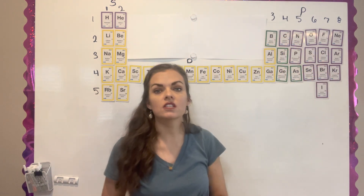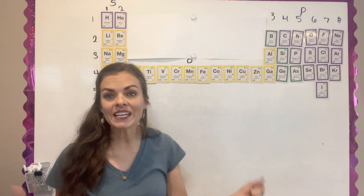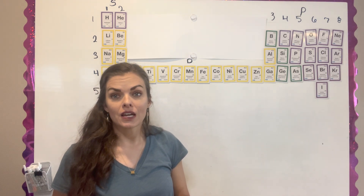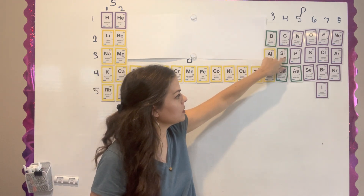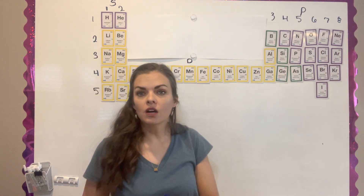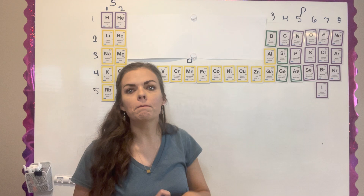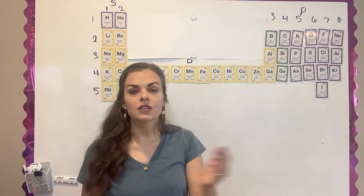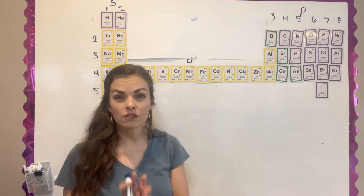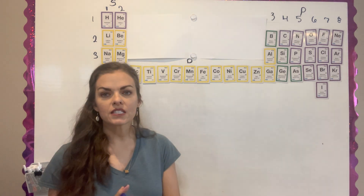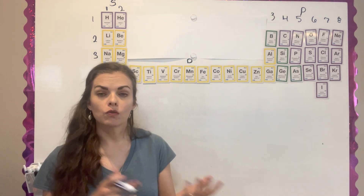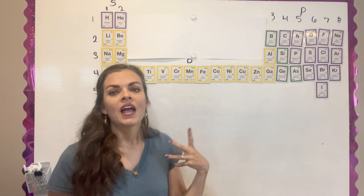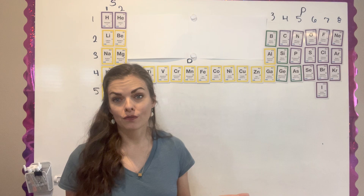Non-metals have sixes and sevens in their columns, so they're easily going to gain an electron to have eight valence electrons. But we do have this stair-step here — green on my periodic table — and these are called metalloids. They have some properties of metals and some of non-metals — they're right in the middle. They actually do both: they can give some and they can take some, but they don't do either very well.